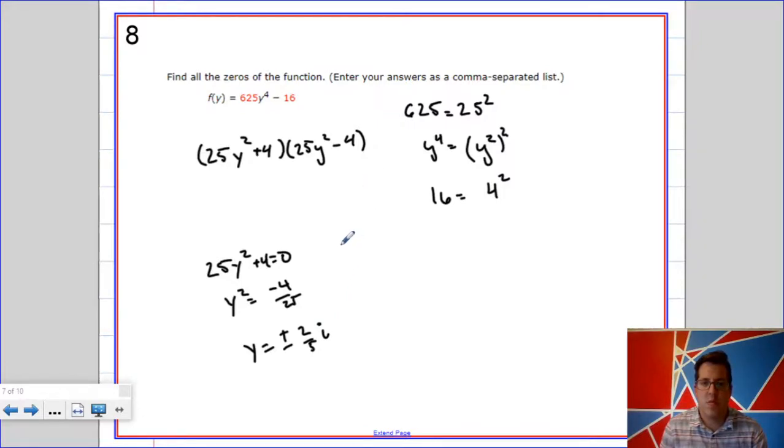Same sort of deal over here, 25y squared minus 4 equals 0, give me y squared equals 4/25ths, or y equals plus or minus 2/5ths.